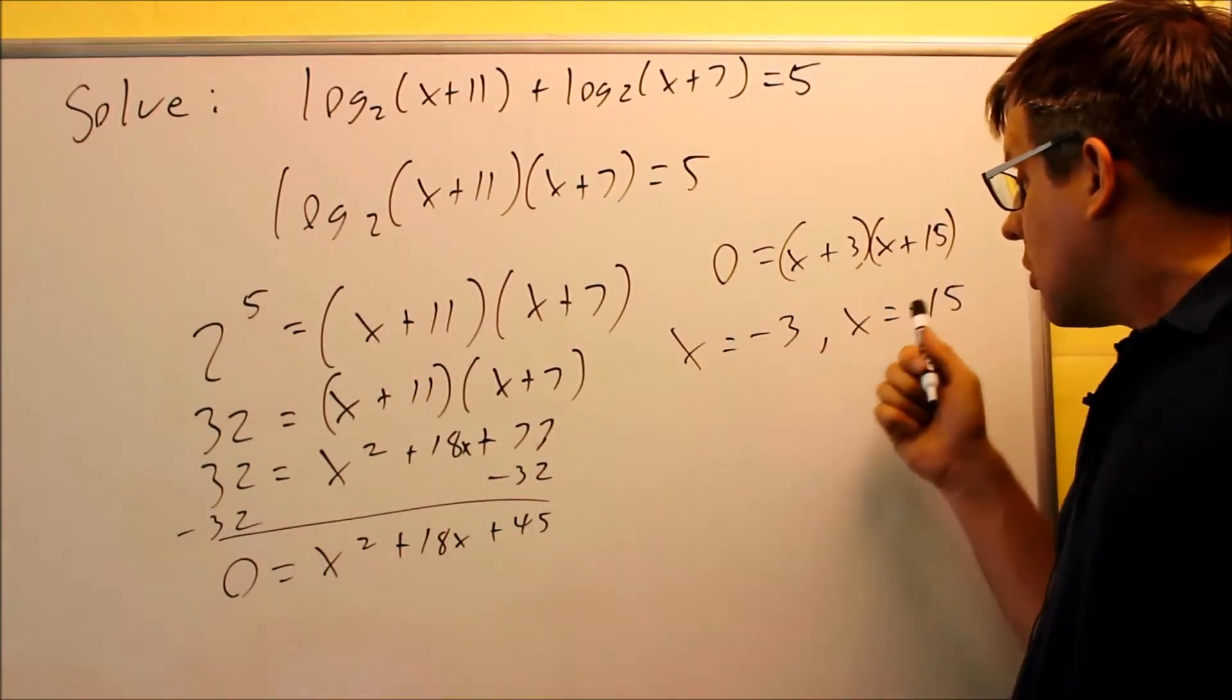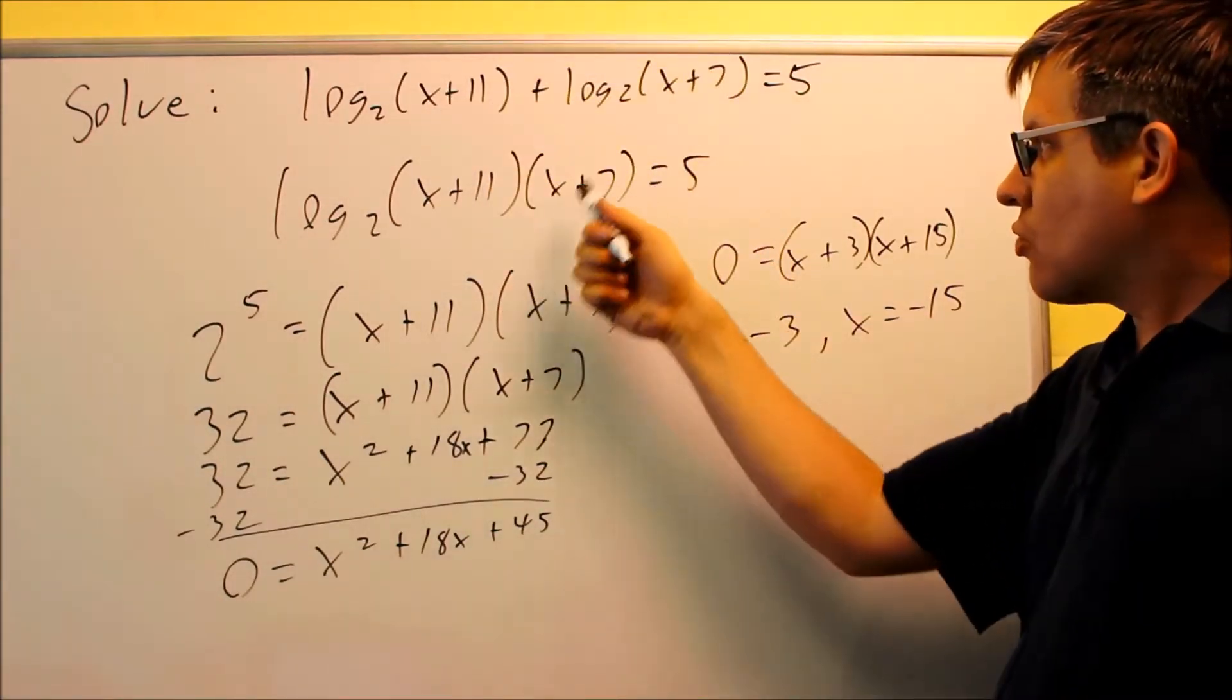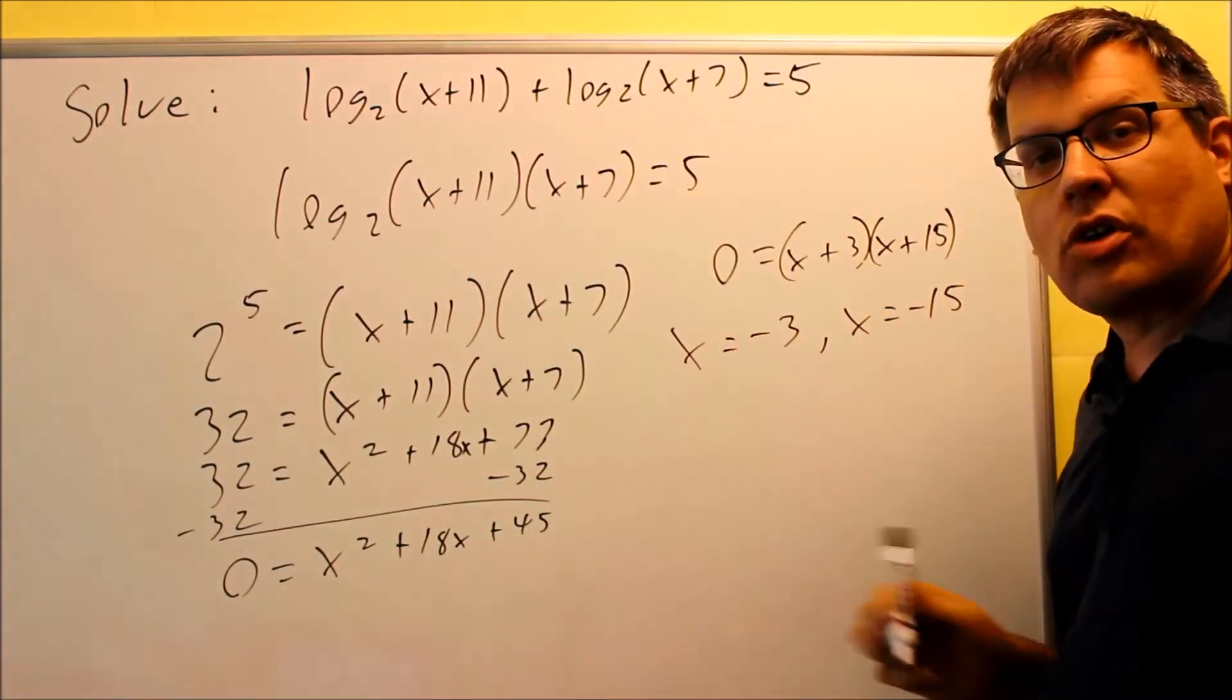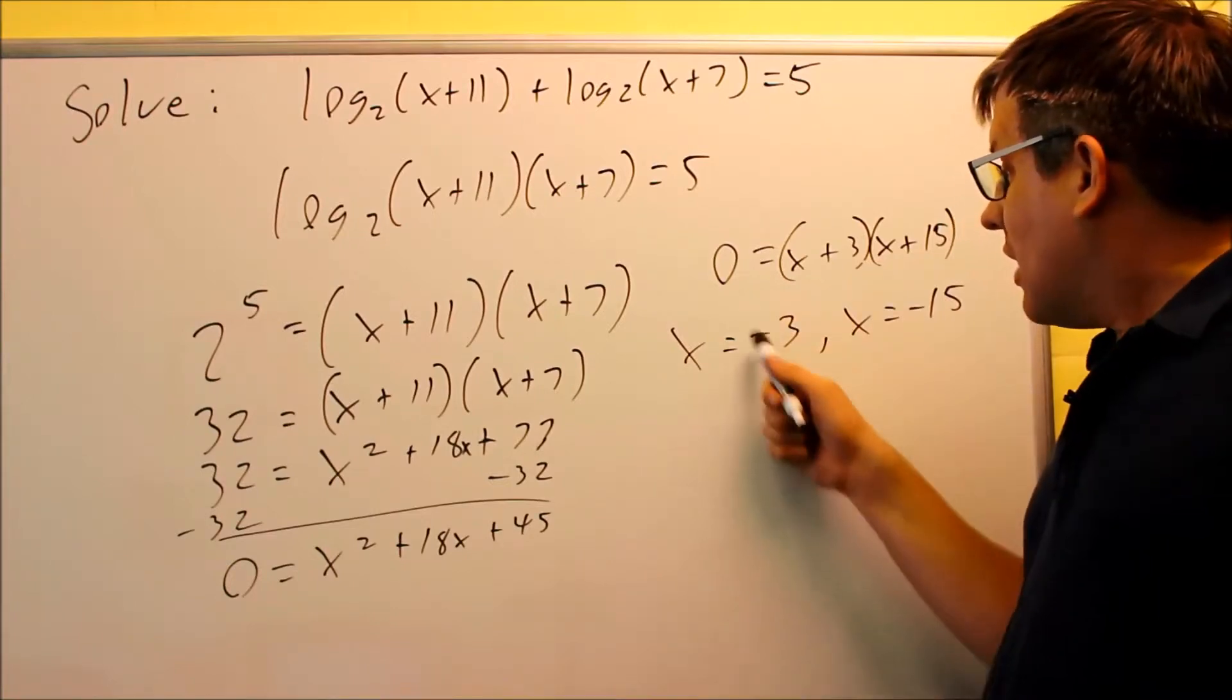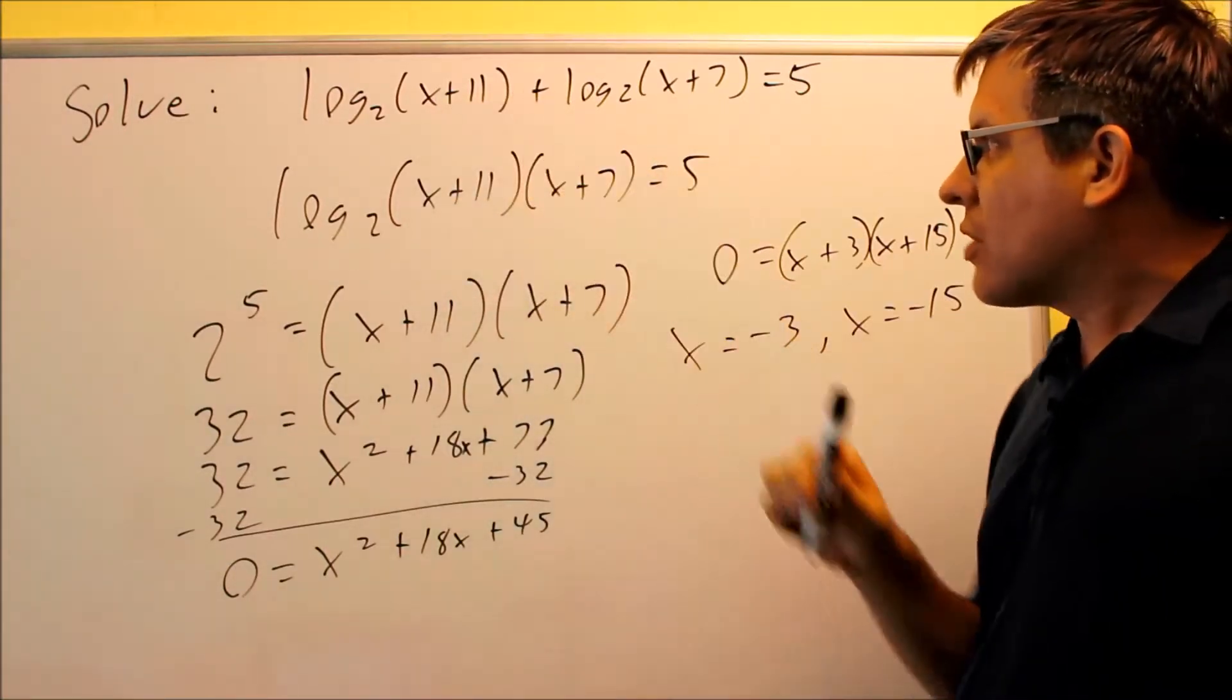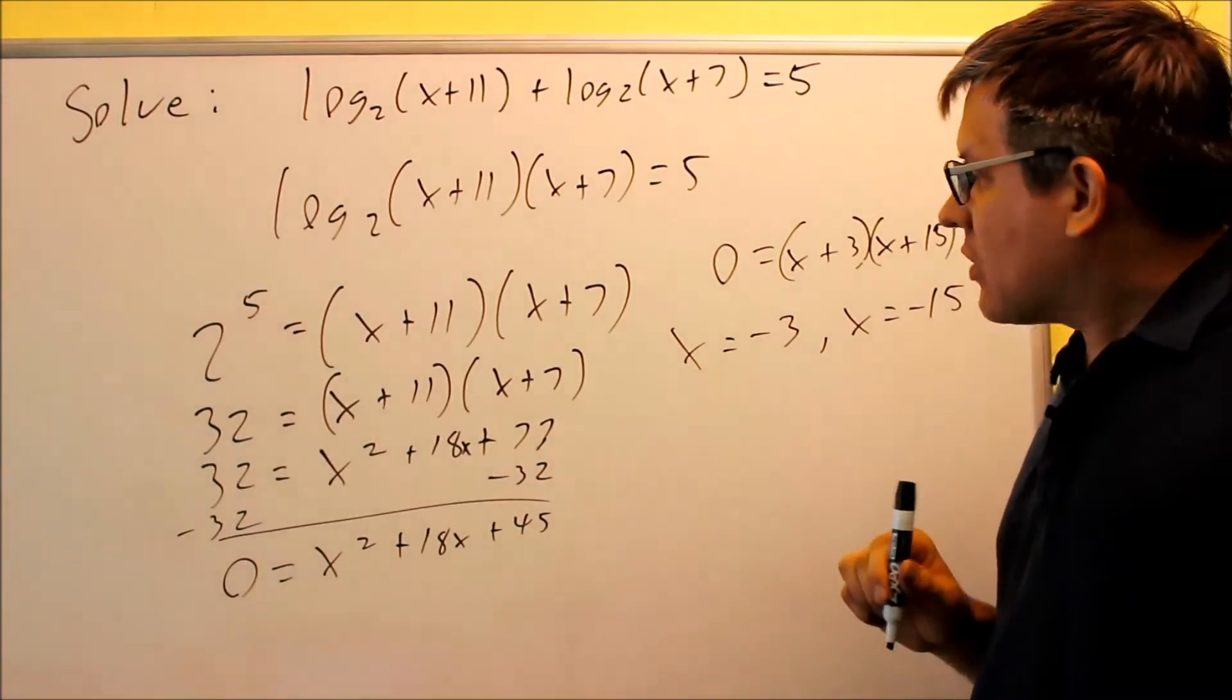Now both of these, we have to check into the original one, not this one, the original one, just to make sure we don't get any domain problems. Negative three will go into that first one, negative three plus eleven, that's okay, that's a positive number.